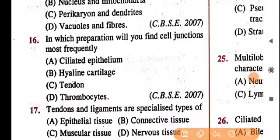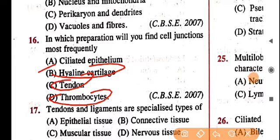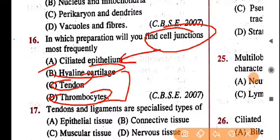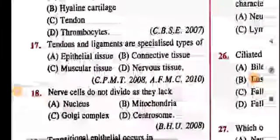Question 16: in which preparation will you find cell junctions most frequently? The answer is isolated epithelial tissue without any doubt. Hyaline cartilage, tendon, and thrombocytes are not part of epithelium. Cell junctions are a characteristic of epithelial tissue.